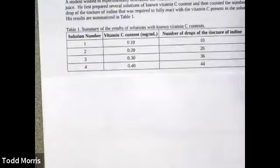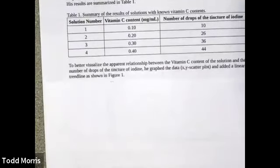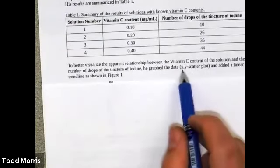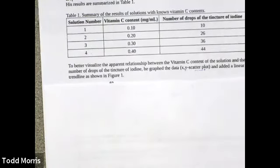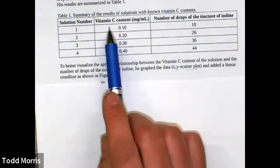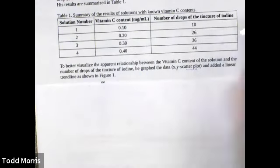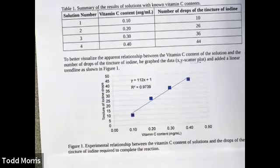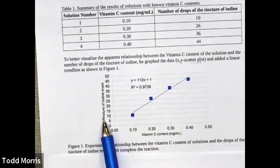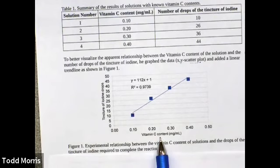To explore this relationship further, the student decided to plot the data using an XY scatter plot — exactly the type of plot we'll always use for our course. He plotted the number of drops of tincture of iodine on the y-axis and the vitamin C content on the x-axis, producing Figure 1. Figure 1 shows that there is, in fact, a fairly linear relationship between the number of drops of tincture of iodine and the vitamin C content.